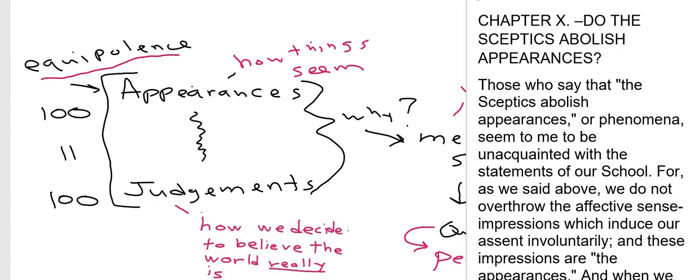Now in the next section of our reading, still on that same page for Sextus, there's another quote that qualifies what we talked about in an important way. So here, Sextus asks, well, are we saying then that for the skeptic, appearances are abolished? We can't even say how things seem to us. And here, Sextus starts to answer that question.